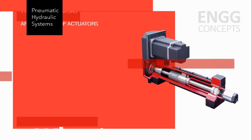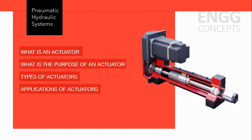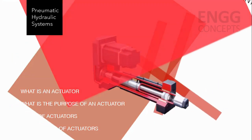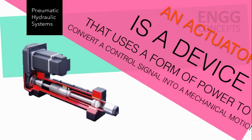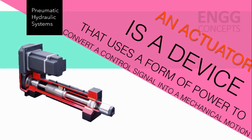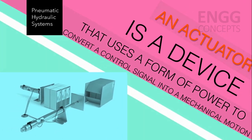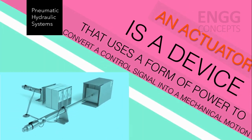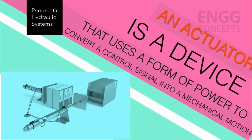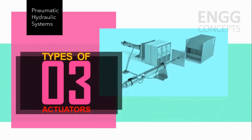Welcome to Engineering Concepts. In this video we are going to talk about actuators. An actuator is a device that uses a form of power to convert a control signal into mechanical motion. In simpler terms, an actuator is a device that makes something move. In order to move, actuators use a form of power and convert it into mechanical motion.